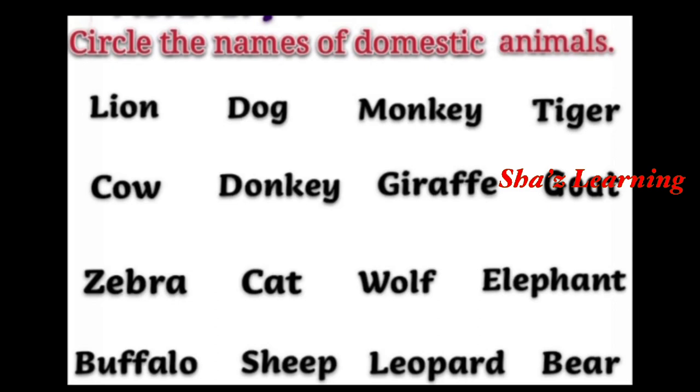First activity: Circle the names of domestic animals. What do you mean by domestic animals?